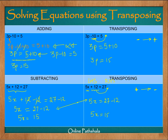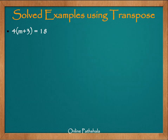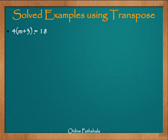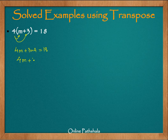Now let us look at a few problems using transposition. We have the equation 4 into (m plus 3) equals 18. Since we have a bracket, we must first open it and simplify before solving. We multiply 4 with m and then 4 with 3, giving us 4m plus 12 equals 18.